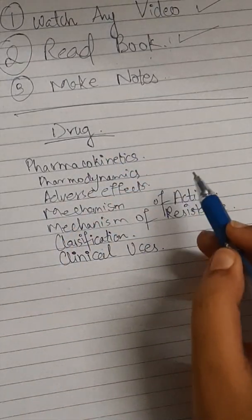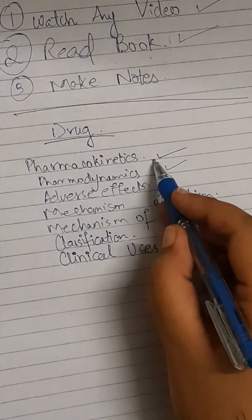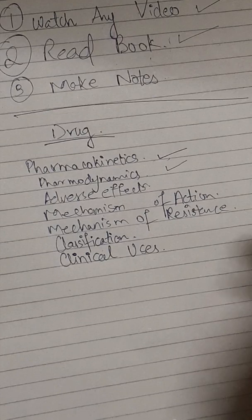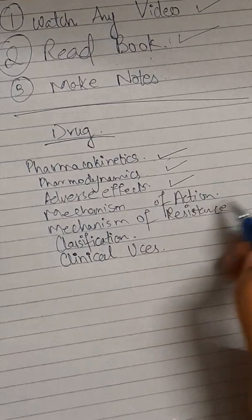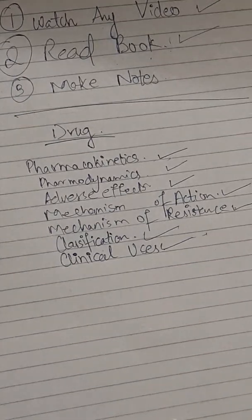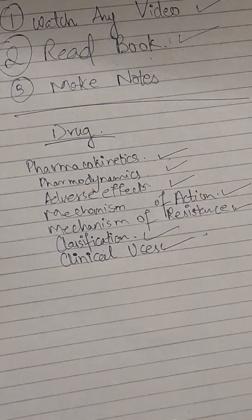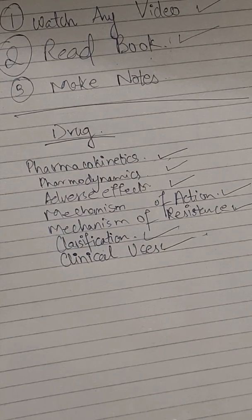Another important point is clinical uses — clinical uses of any drug are also very important. So to summarize, your table should cover pharmacokinetics, pharmacodynamics, adverse effects, mechanism of action, mechanism of resistance, classification, and clinical uses. This is how you study pharmacology. I suggest studying mini Katzen or any book your medical school has recommended or that you find easier. Thank you so much.